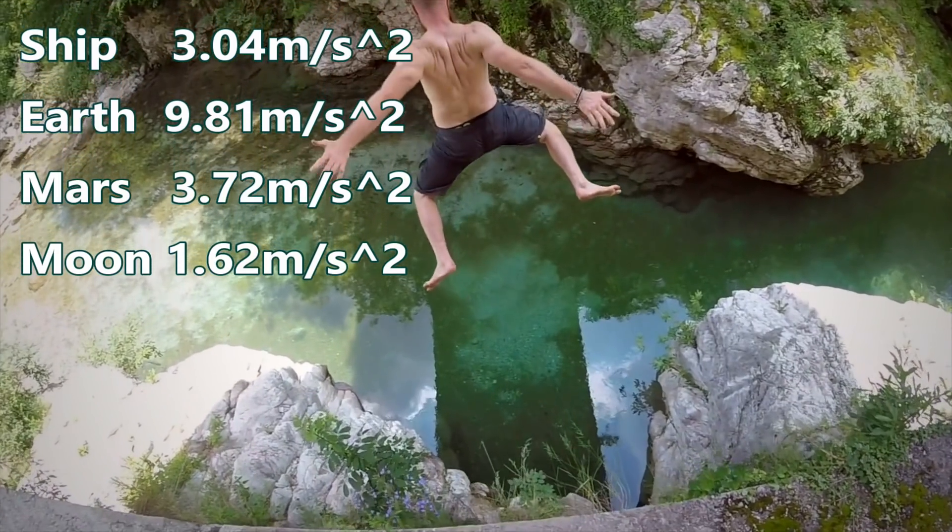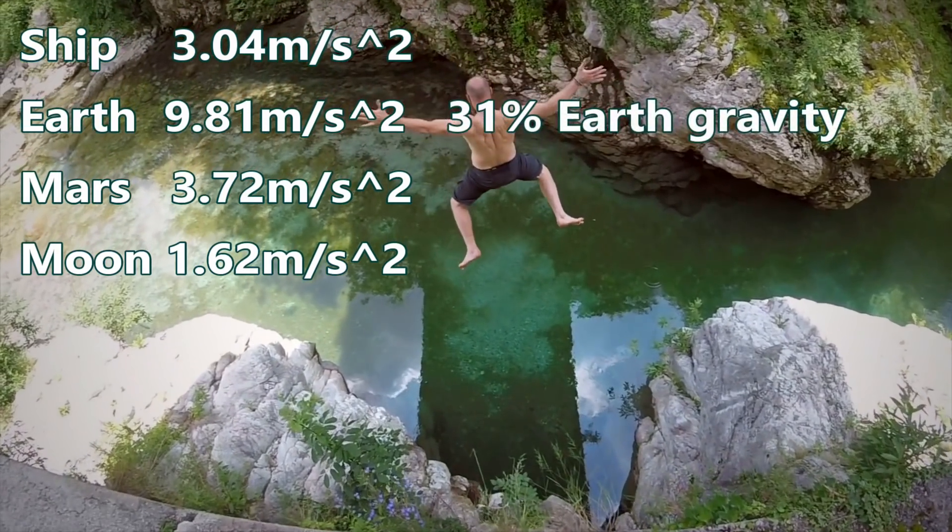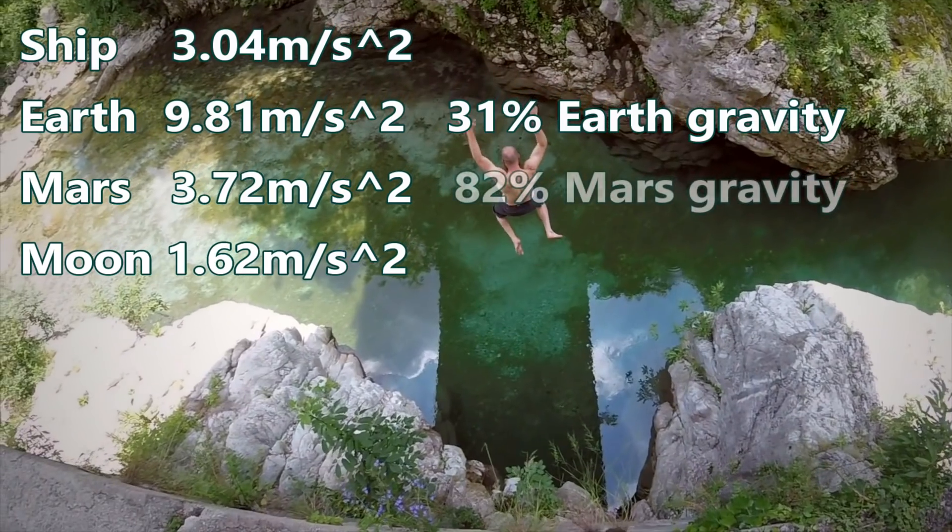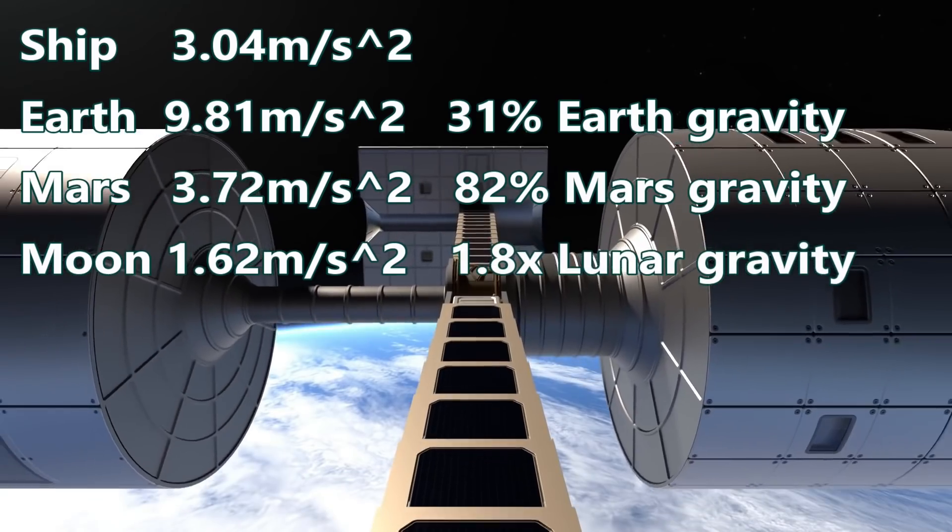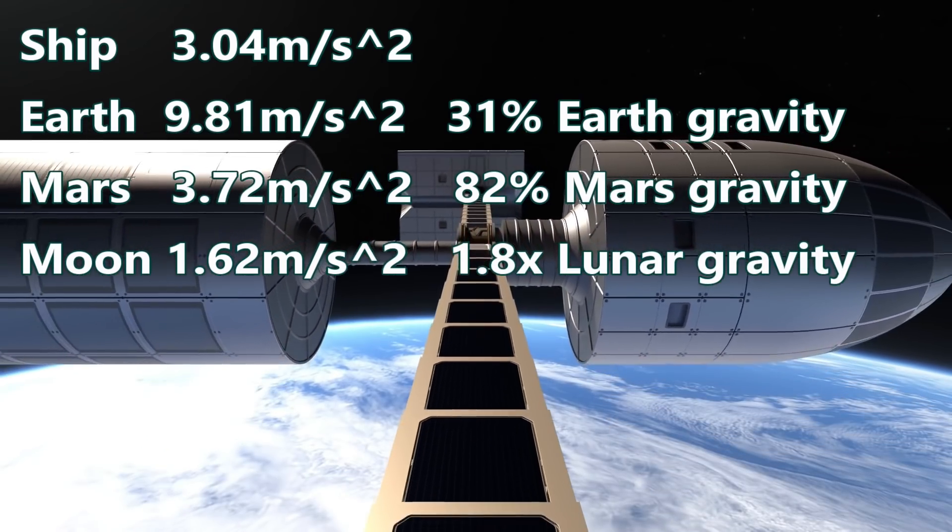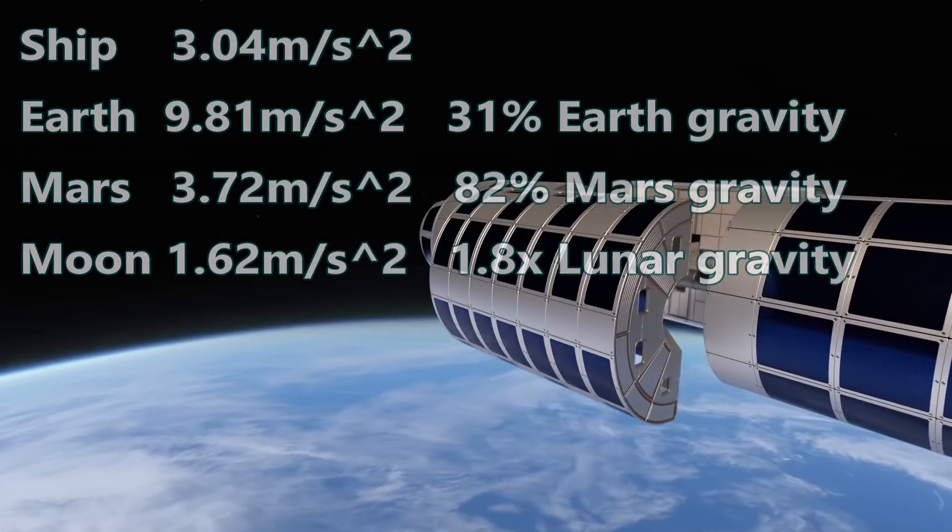So this starship would give us about 31% normal Earth gravity, a little less than Martian gravity, and not quite twice lunar gravity. This would be enough to maintain some muscle and bone mass, and use normal plumbing to take showers, etc.